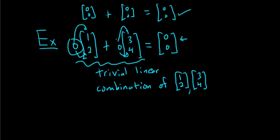So trivial means all of these coefficients are 0. Non-trivial is the opposite of that. It means that at least one of them is not 0. So trivial means all 0. Non-trivial means at least one not 0.